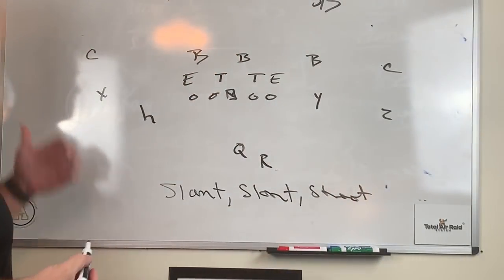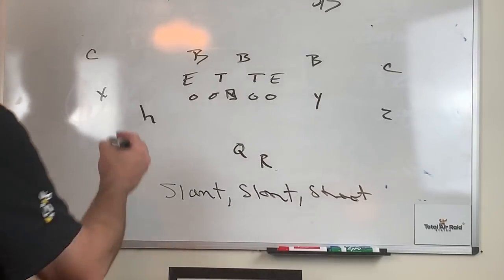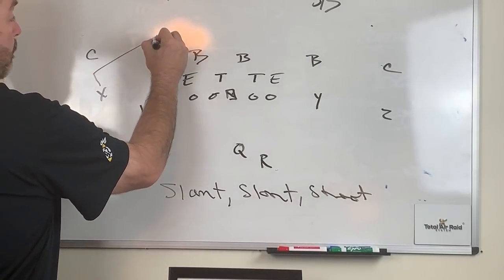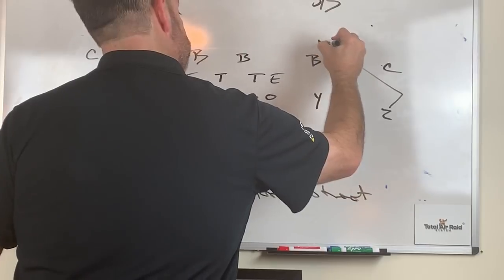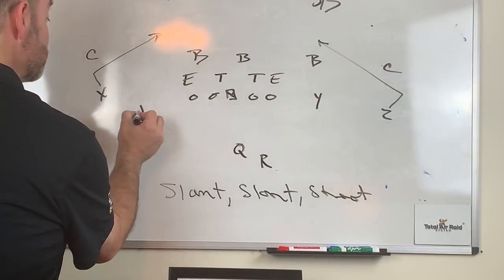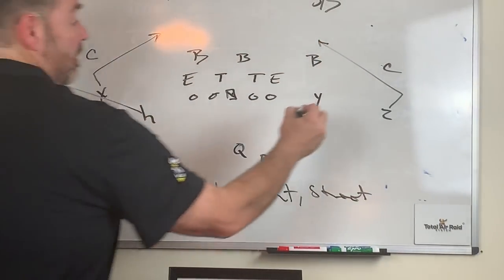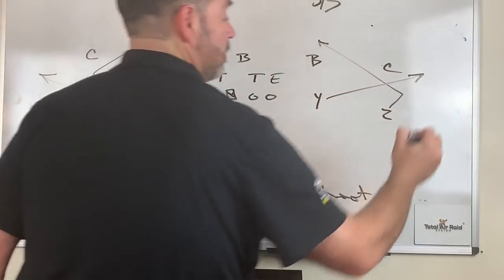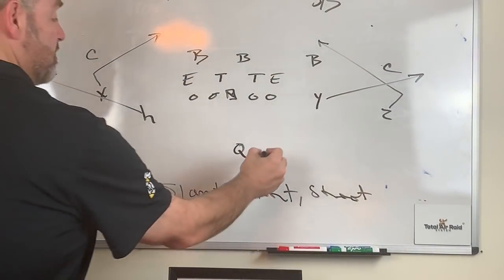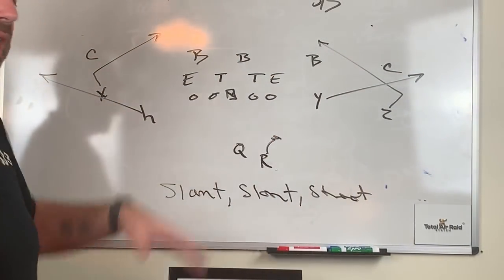Okay, so we run slant, slant, shoot. Basically both sides, outside receivers are running slants. Both inside guys are running shoots. And then we're going to six man block this up with a ram line call and all that other good stuff.